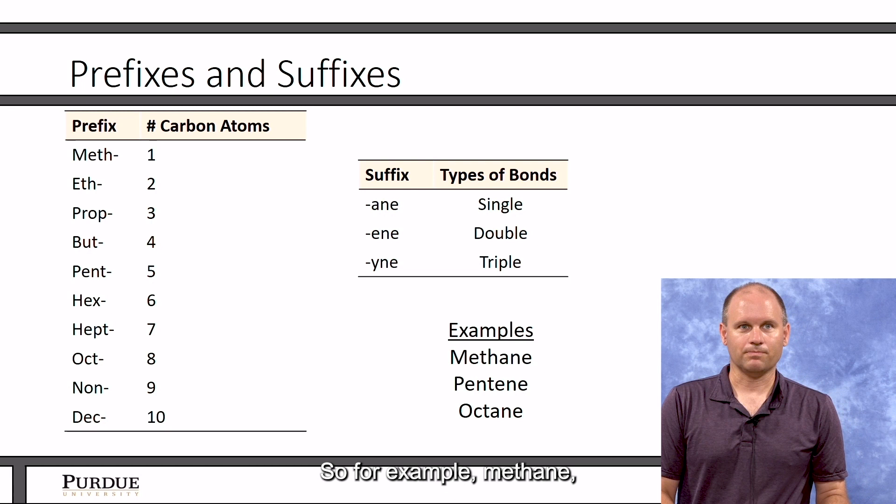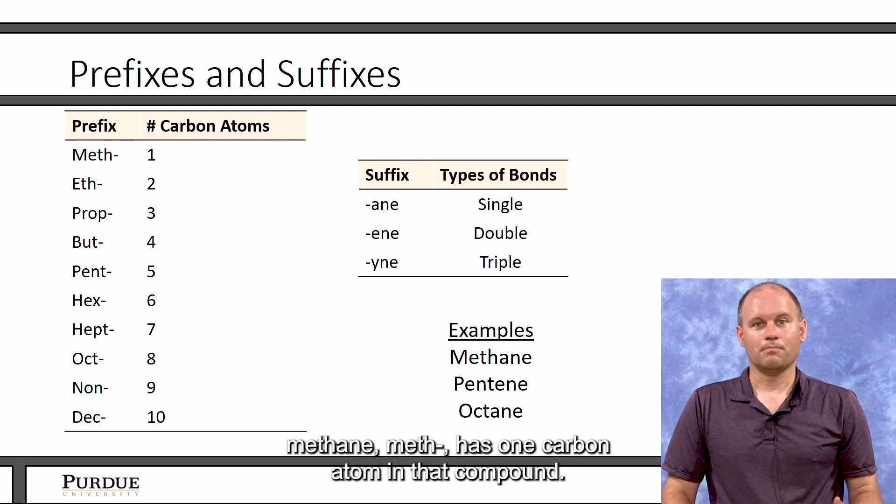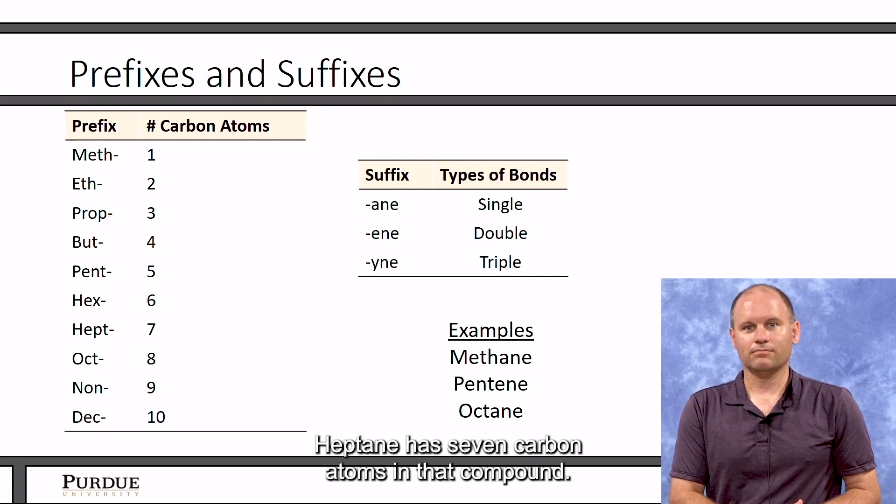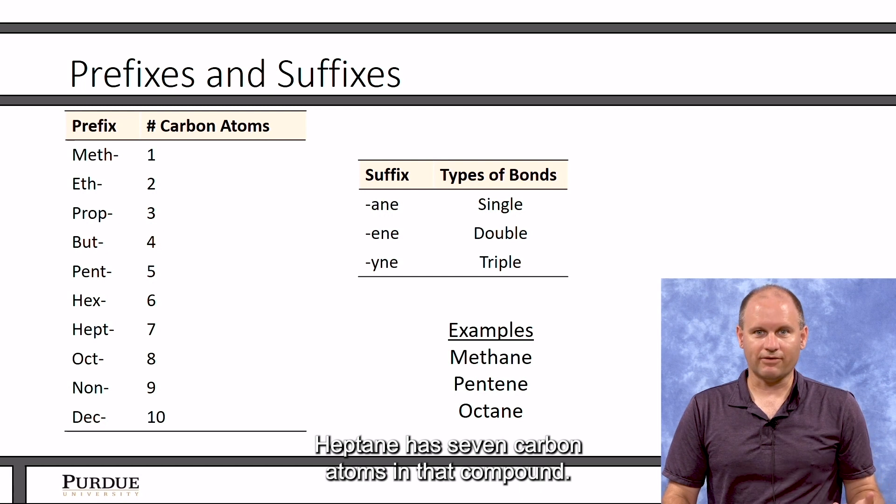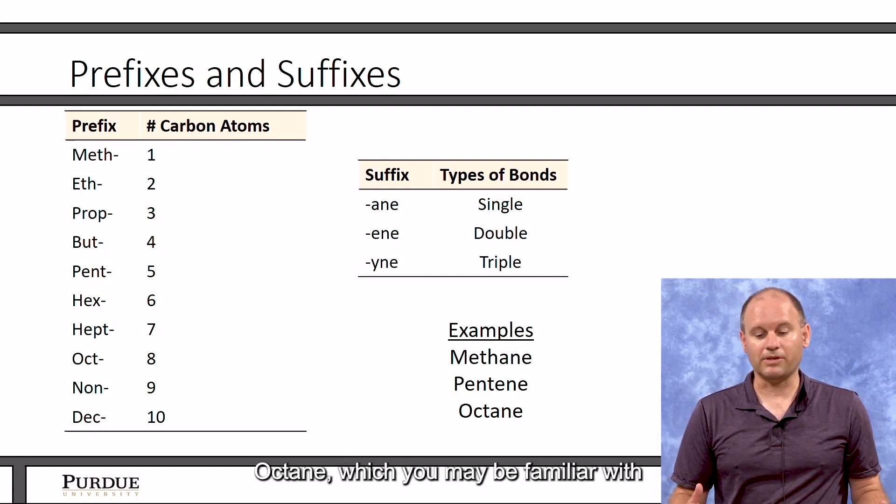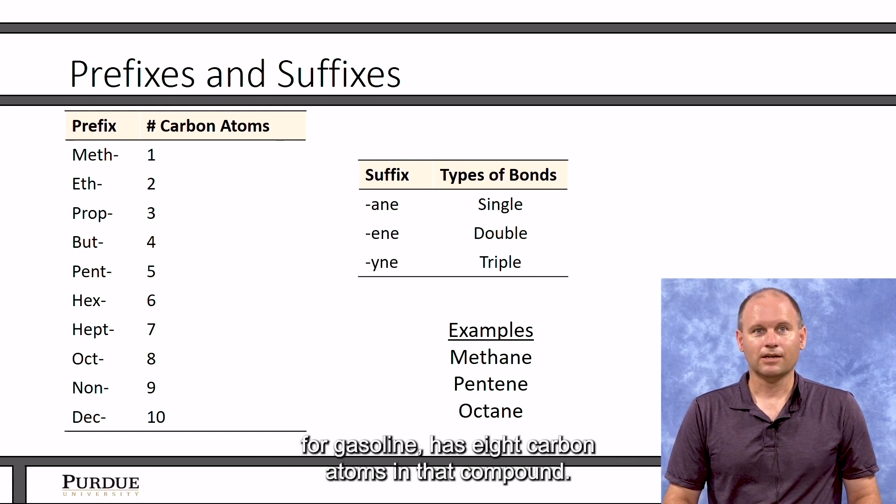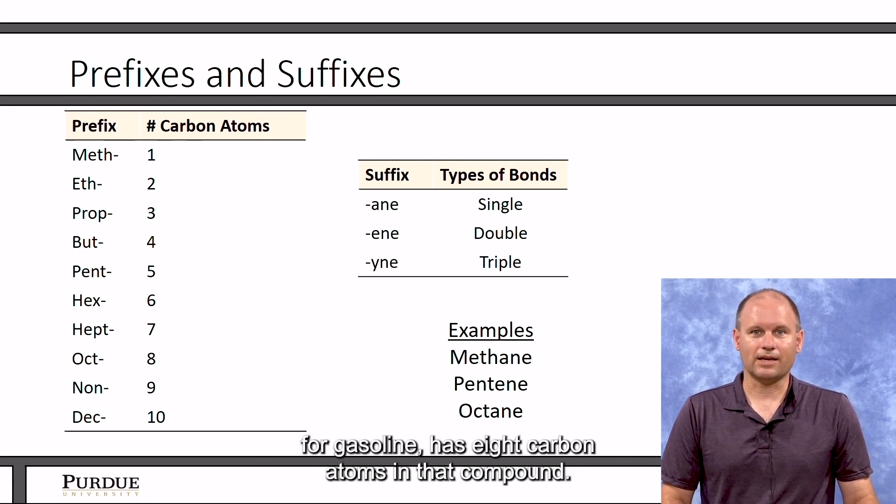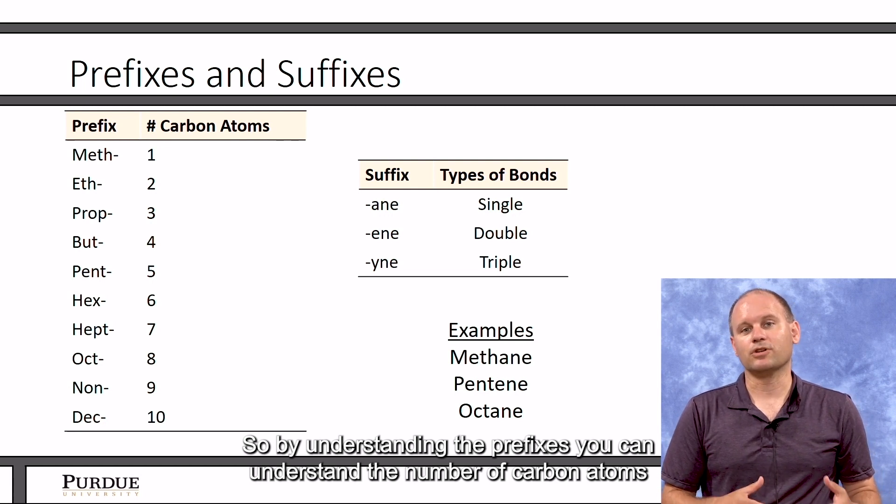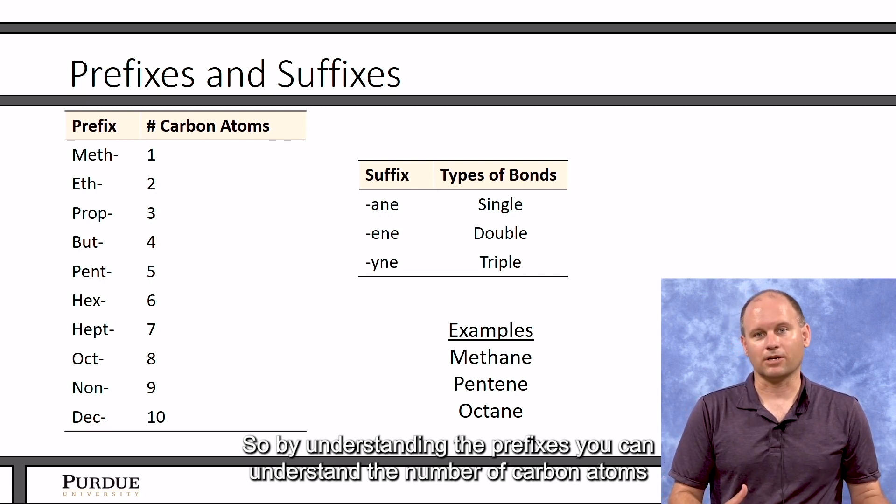So for example, methane—meth—has one carbon atom in that compound. Heptane has seven carbon atoms in that compound. Octane, which you may be familiar with from gasoline, has eight carbon atoms in that compound. So by understanding the prefixes, you can understand the number of carbon atoms in a compound.